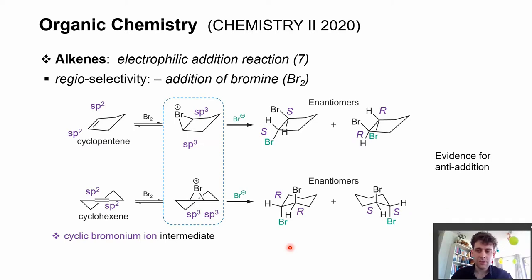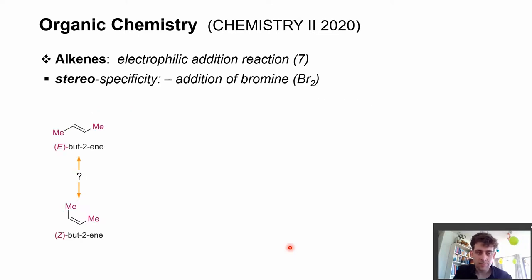Okay, now that we have talked about the anti-addition of bromine to a double bond, I would like to go a step further and talk about the regioselectivity, or the stereoselectivity in this case, a little bit more. This is what you see on this slide here.